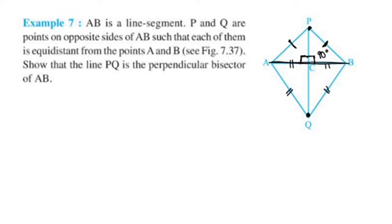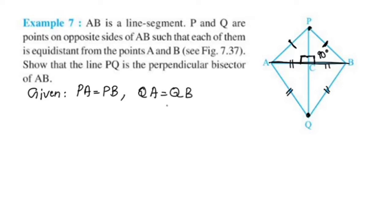We can use the given information. We need to compare the lengths. PA and PB are equal distance, and QA and QB are equal distance. This is what we need to prove: AC is equal to BC, and angle PCA is equal to angle PCB, which is equal to 90 degrees. This is to prove perpendicular.